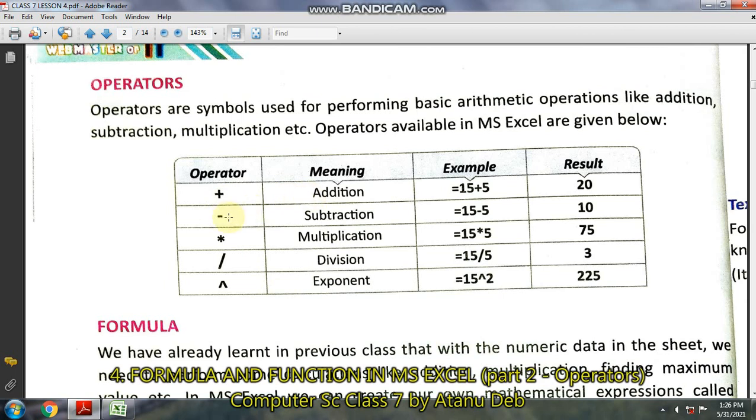Like plus stands for addition, minus subtraction, and multiplication here is the asterisk which is on the keyboard. Then you have division, this is called the backslash, and exponent. You will get this symbol on the keyboard where 6 is written on the left side. On top of 6 this symbol for exponent is given.